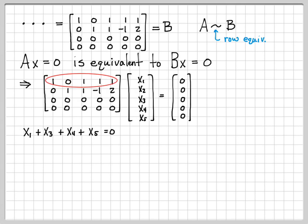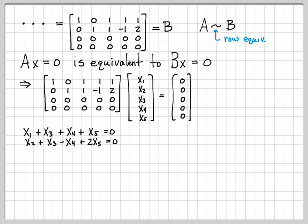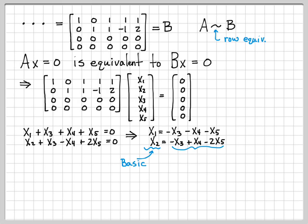Looking at the first row of the reduced matrix, we see that x1 + x3 + x4 + x5 = 0. The second row gives x2 + x3 - x4 + 2x5 = 0. These are the only two non-trivial equations; the remaining rows are just 0 = 0. Rearranging, we solve for x1 and x2 in terms of the other variables. Here x1 and x2 are the basic variables, while x3, x4, and x5 are the free variables, so we express the basic variables in terms of the free variables.